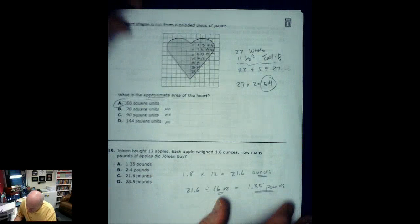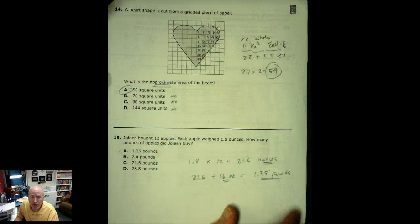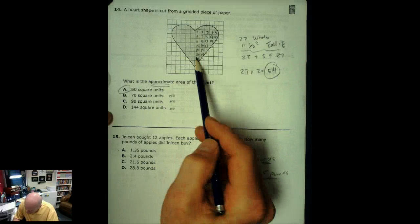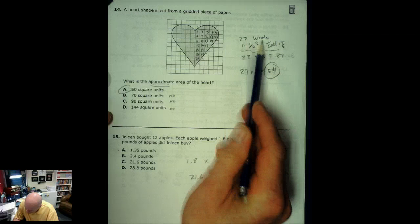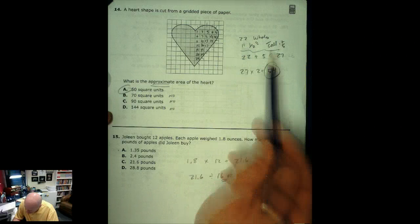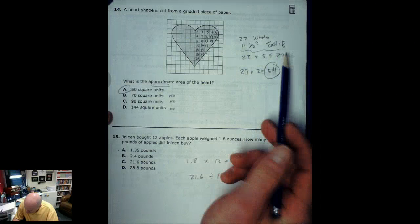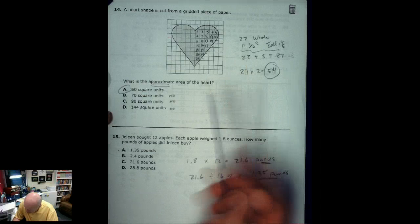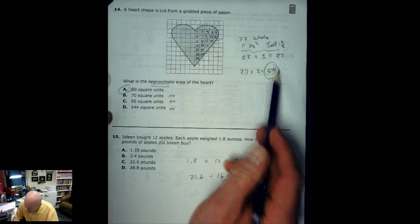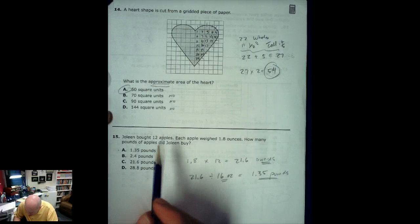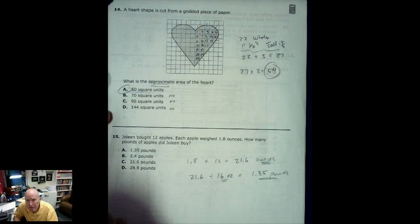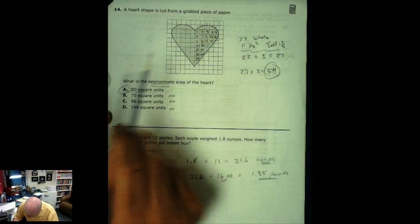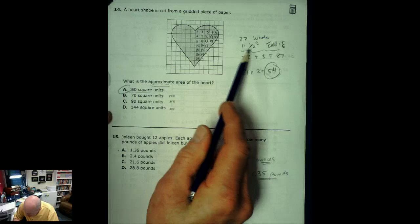Next one here. This heart is cut from a gridded piece of paper. What is the approximate area of the heart? What I did here was I just did half of the heart and I got 22 wholes and then I had 11 half ones. You can see my little ticks. So I called 11 and a half, I just called that about 5. So I had 22 plus 5 is 27. 27 times 2. I had about 54 square units and the closest answer to that was 50. Again you can see all my little half ones but some of them were kind of tiny so instead of 6 I just called it 5.